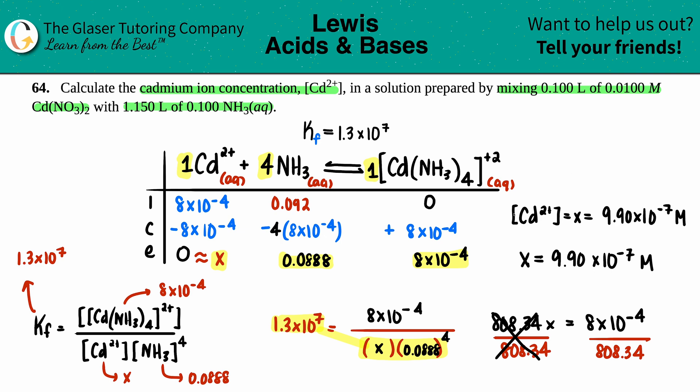Notice that x = 9.90 × 10⁻⁷ is indeed very very close to zero, which validates our approximation. That's the answer! I hope this helped — let me know in the comments, and please press the subscribe button. We're almost at 20,000 subscribers — thank you so much!